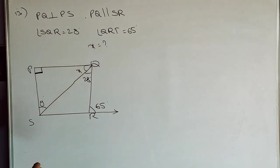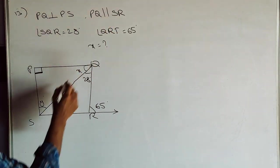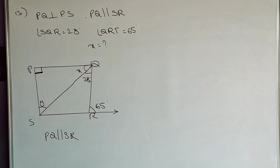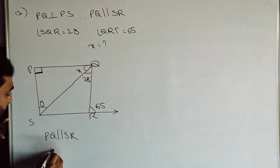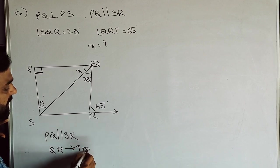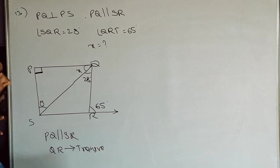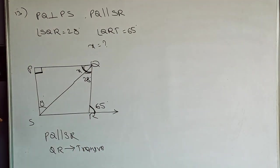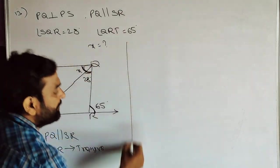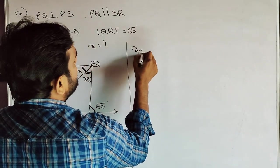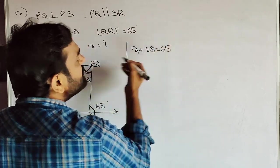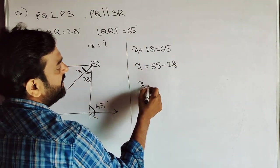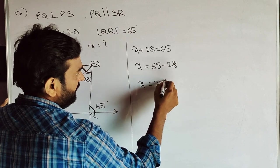PQ is parallel to SR — that is given. QR is the transversal. Then using alternate interior angles, x plus 28 equals 65. So x equals 65 minus 28, which gives x equals 37 degrees.